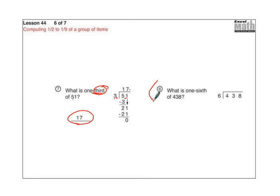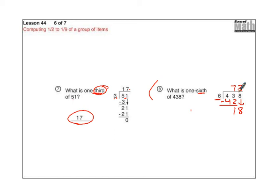1 sixth of 438 — so 1 sixth means we're dividing by 6. They were real nice to you and showed you that you are dividing by 6. 6 goes into 43 seven times. 6 times 7 is 42. 43 minus 42 is 1. Bring down the 8. 18 divided by 6 is 3. So the answer is 73. Thanks for watching.